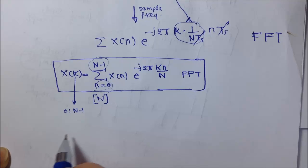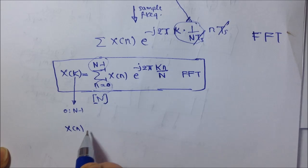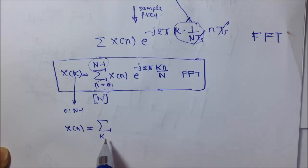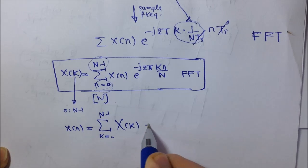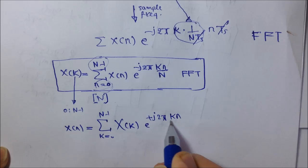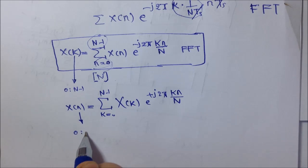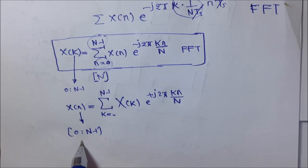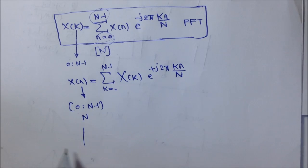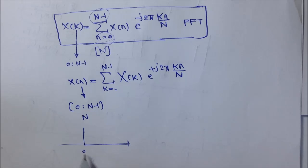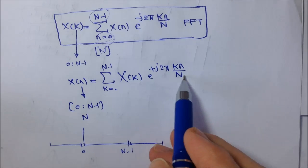The inverse fast Fourier transform is: x of n equals summation from k equals 0 to N minus 1 of X of k times e to the plus j 2 pi k·n over capital N, where n runs only from 0 to capital N minus 1. If you try more n values outside this range, x of n will simply start to repeat itself. That's because we have sampled the frequency domain.